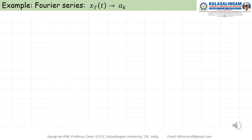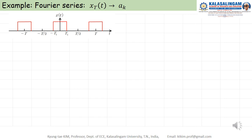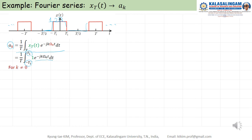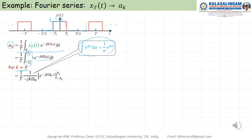Let's take one example of a Fourier series. Here is a rectangular waveform with amplitude equal to 1, repeated from minus infinity to infinity, with pulse width 2·T1. The Fourier series coefficient a_k equals the integral over one period. The meaningful range is from −T1 to T1, where f(t) equals 1. For k not equal to zero, we apply the integral formula, substituting the limits −T1 to T1.